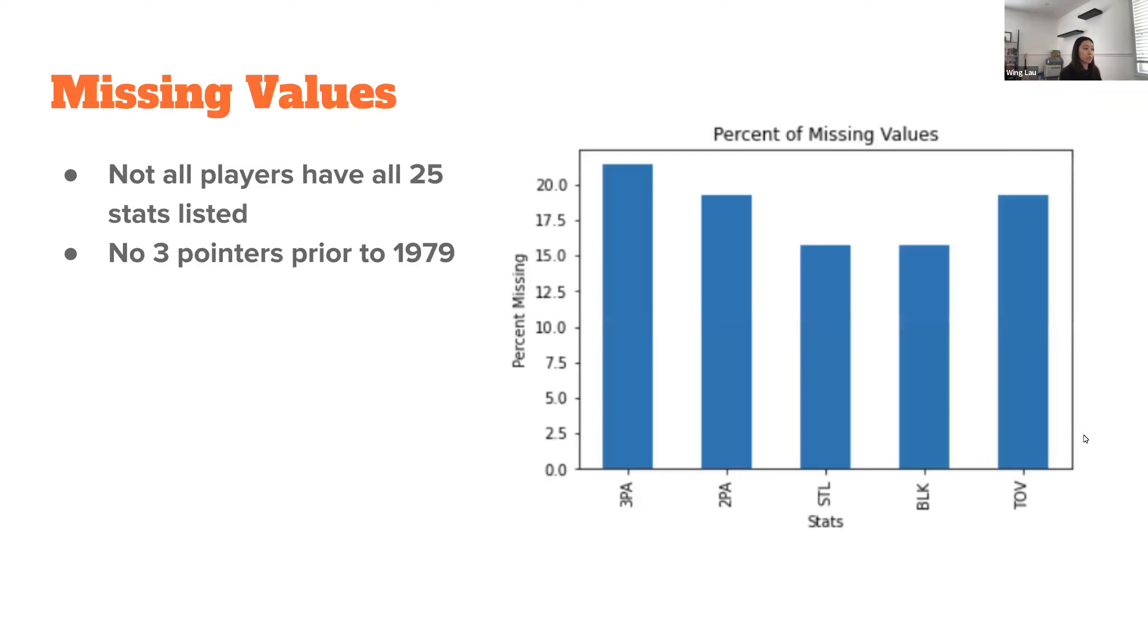My data also had a lot of missing values. Not all players had all 25 stats. And also prior to 1979, three pointers weren't really a thing. The chart on the right shows some of the features and how much data I was missing for those. It's a significant amount, but I'll talk about how I navigated those later in the presentation.